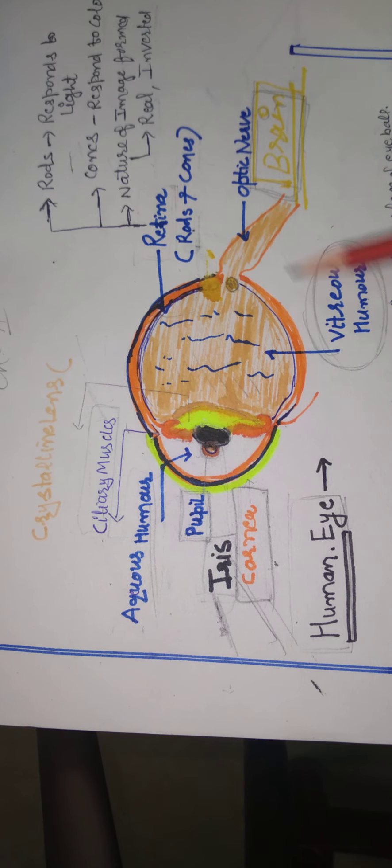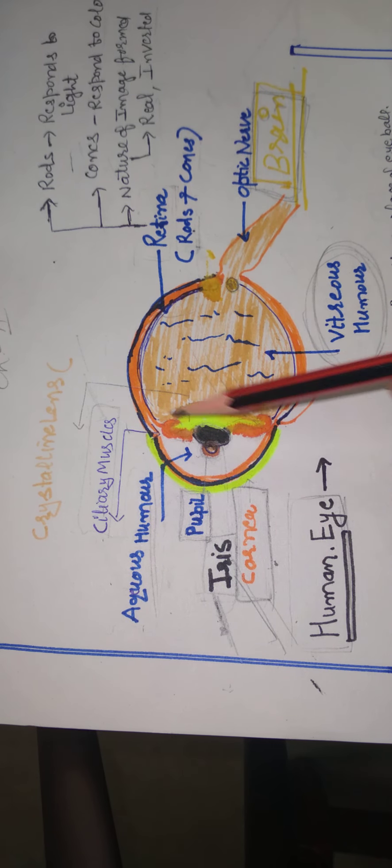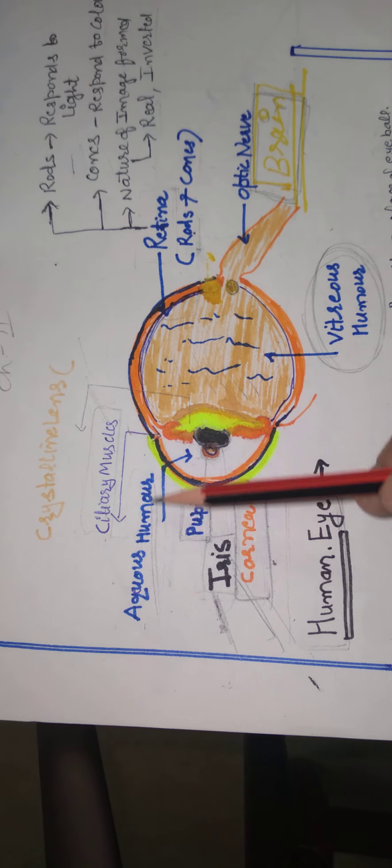This is the structure of the eye. Various parts of the eye are marked with the sketch.